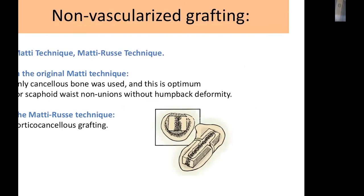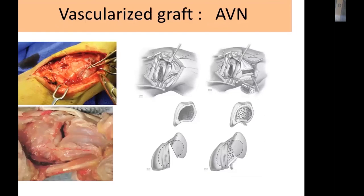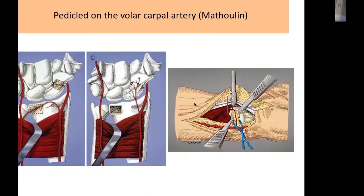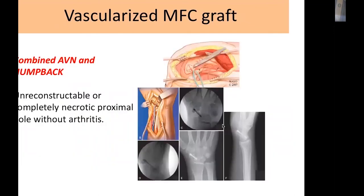Non-vascularized graft options are the original Matti-Russe cancellous or corticocancellous graft. Vascularized graft is used in AVN: either a dorsal vascularized graft from the 1,2-intercompartmental supraretinacular artery, or a volar approach popularized by Matola using the volar carpal artery, or a free medial femoral condyle graft in cases of combined AVN and humpback deformity.